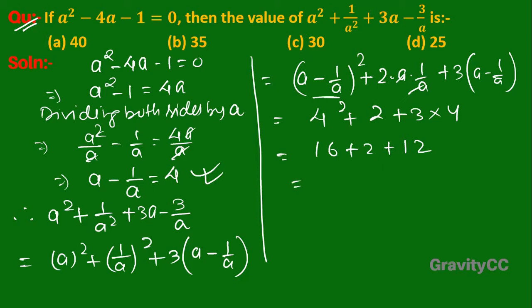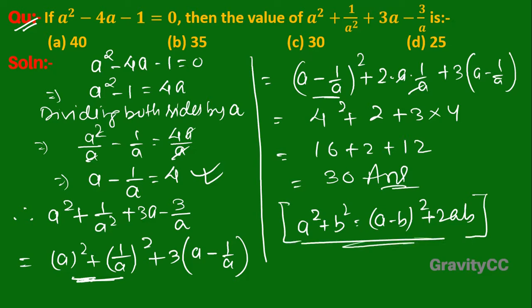This equals 30. We used the identity a² + b² = (a - b)² + 2ab. So option C is the correct answer.